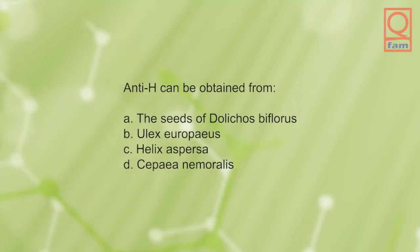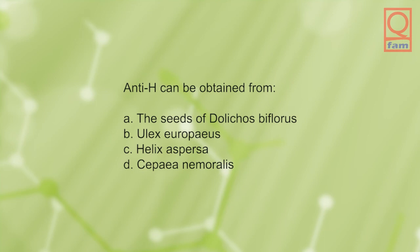Anti-H can be obtained from: A) the seeds of Dolichos biflorus, B) Ulex europaeus, C) Helix aspersa, D) Cepaea nemoralis. The answer is B, Ulex europaeus.